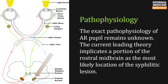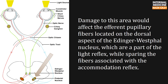The exact pathophysiology of AR pupil remains unknown. The current leading theory implicates a portion of the rostral midbrain as the most likely location of the syphilitic lesion. Damage to this area would affect the efferent pupillary fibres located on the dorsal aspect of the Edinger-Westphal nucleus, which are part of the light reflex, while sparing the fibres associated with the accommodation reflex.